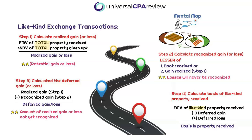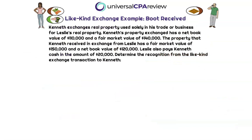Let's go through a few examples to really drive this home. The first example is a situation where boot is received. Kenneth exchanges real property used solely in his trade or business for Leslie's real property. Kenneth's property exchanged has a net book value of $110,000 and a fair market value of $140,000. The property Kenneth received from Leslie has a fair market value of $150,000 and a net book value of $120,000. We also see that Leslie pays Kenneth cash in the amount of $20,000.